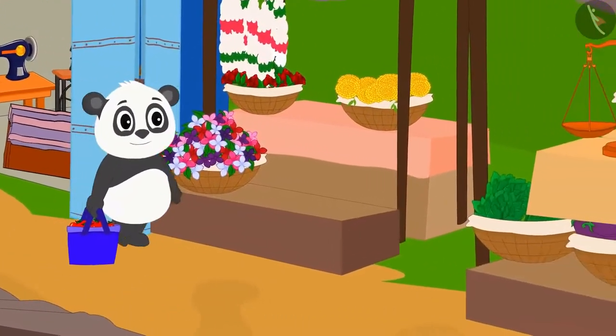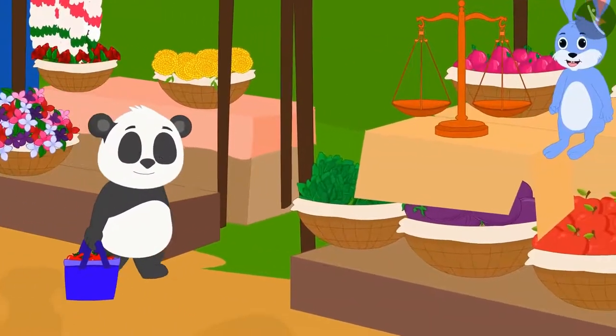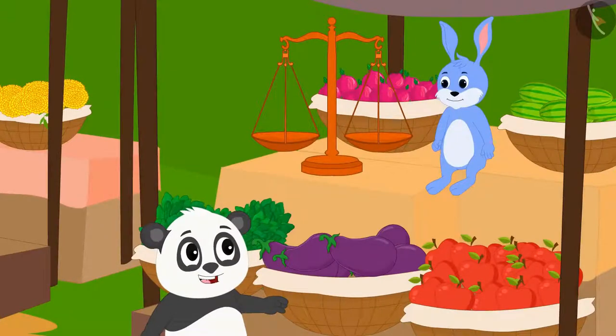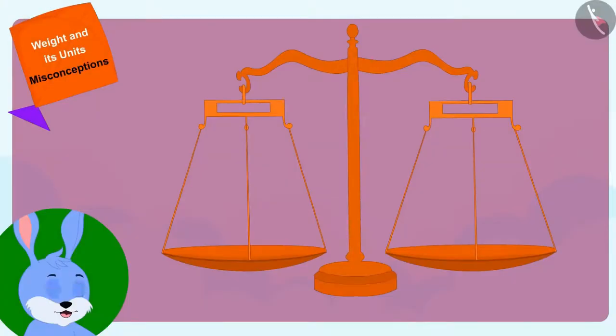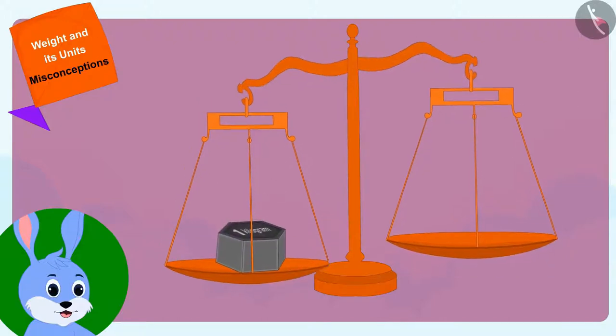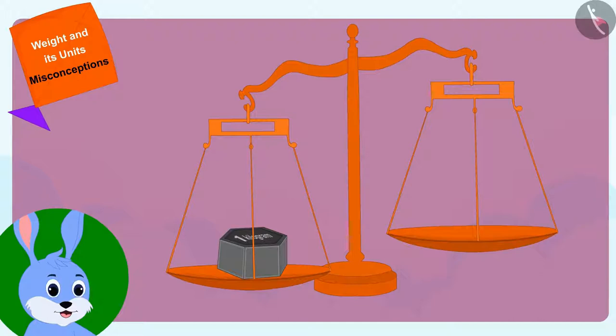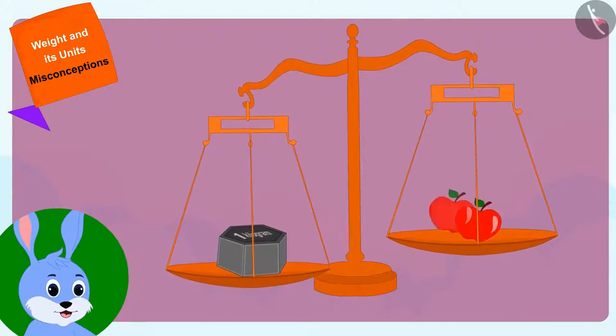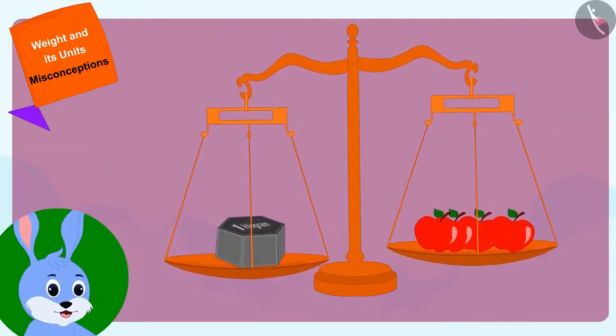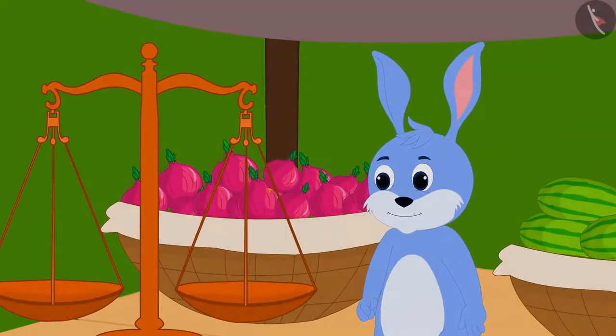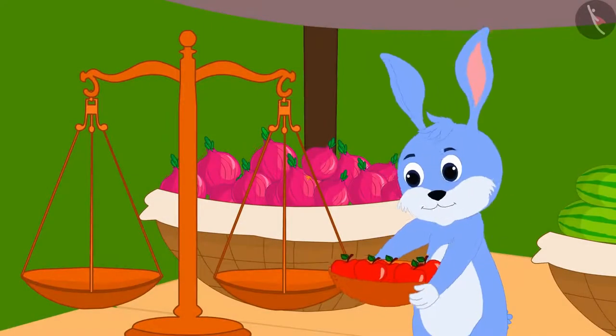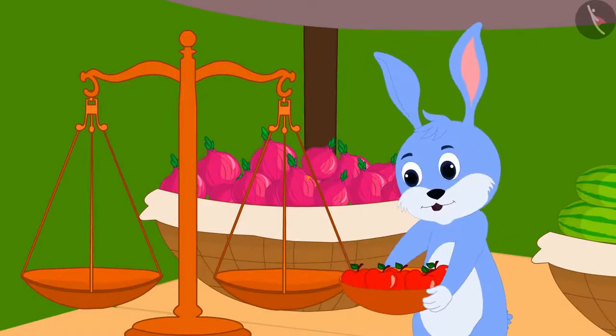Golu went to Bunny's fruit stall next to him. Bunny, give me apples for 50 rupees please, Golu said to Bunny. Bunny put a weight of 1 kilogram in one plate of his weighing scale and weighed apples in the other plate until the two plates came to the same level. Then Bunny said to Golu, here you are. 1 kilogram of apples for 50 rupees.